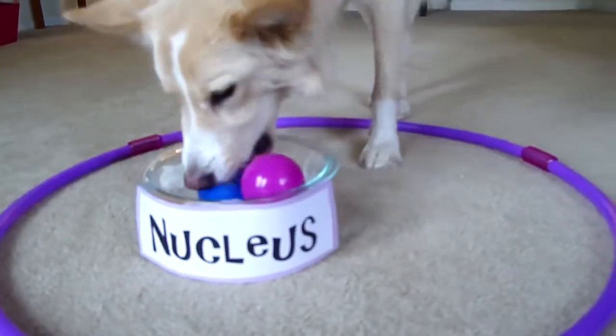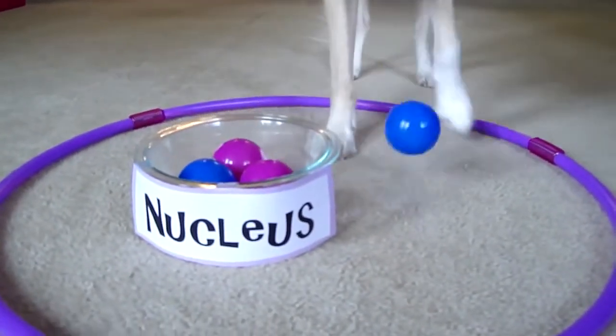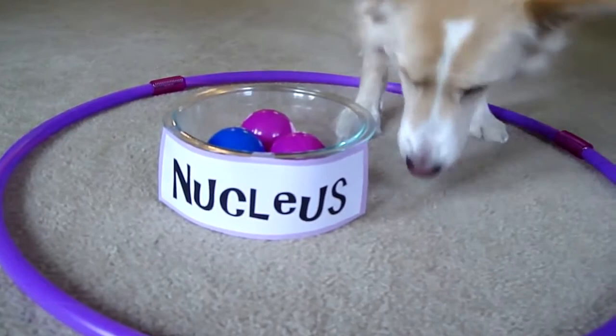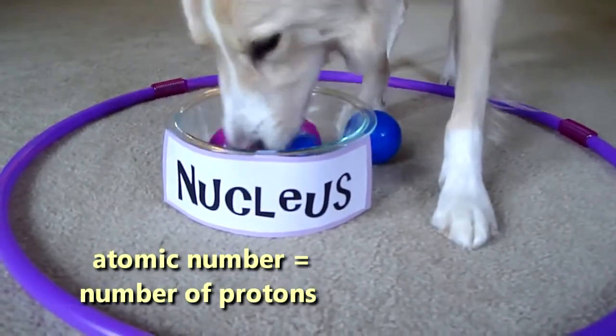Let's try to figure out what element Paige and Dexter have made. Dexter is counting how many protons we have. That'll give us our atomic number.